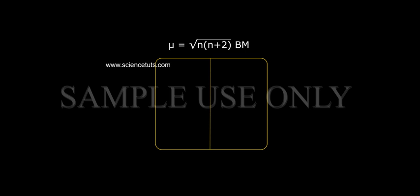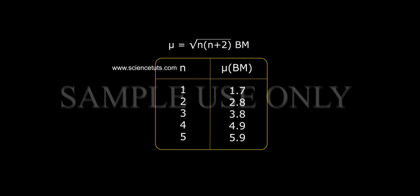μ = √(n(n+2)) BM. For n=1: μ=1.7 BM, n=2: 2.8, n=3: 3.8, n=4: 4.9, n=5: 5.9.